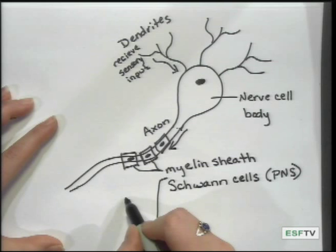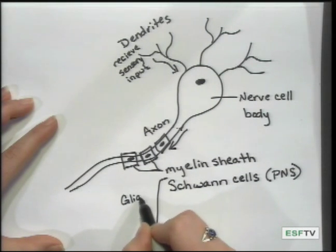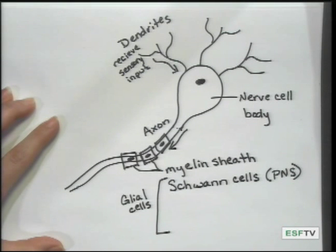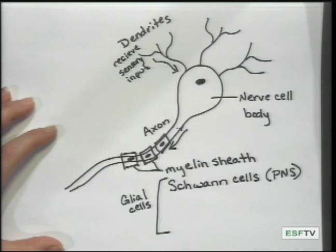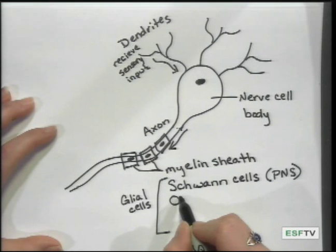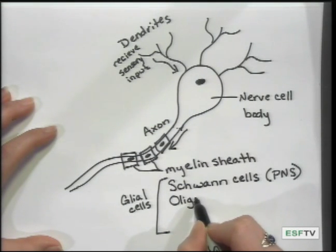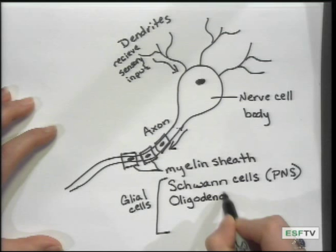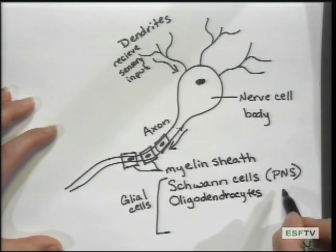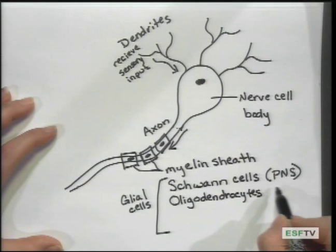Other glial cells — those supporting cells that protect and provide support for the neurons of the nervous system — include oligodendrocytes, which produce the myelin sheaths on the axons in the central nervous system.